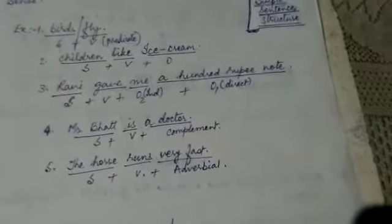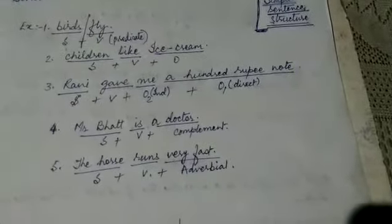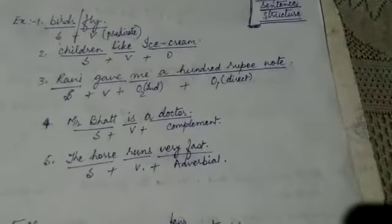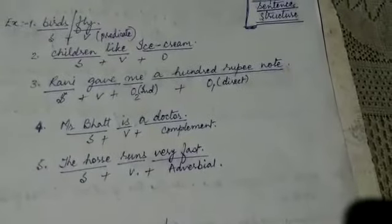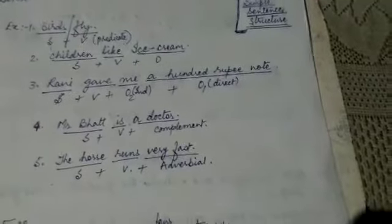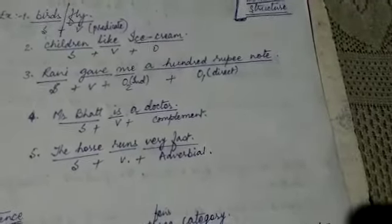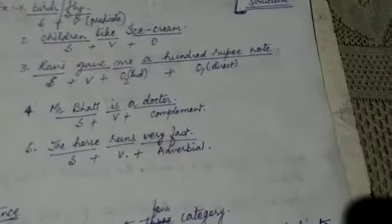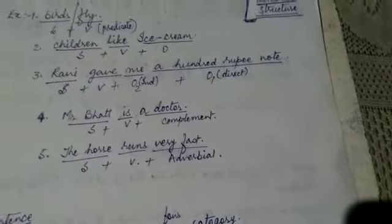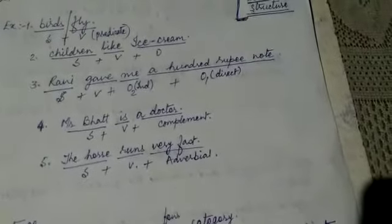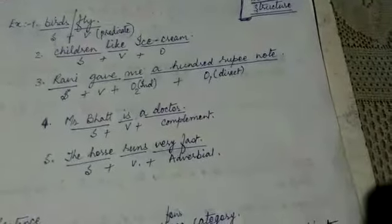We will take another session for complement on the difference between object and complement. Here I simply want you to understand the basic thing, the basic structure. I have written five structures. There are actually around twenty or twenty-five structures in English language for simple sentences, which is normally taught in school. But what we can do is we don't have to go in that sort of length because we are in standard eight.